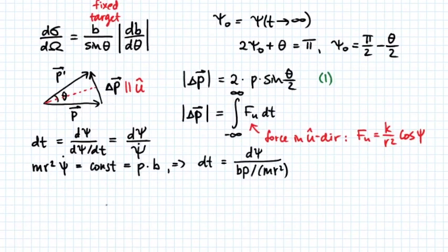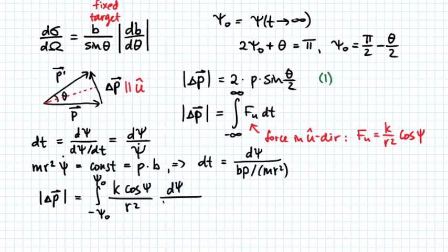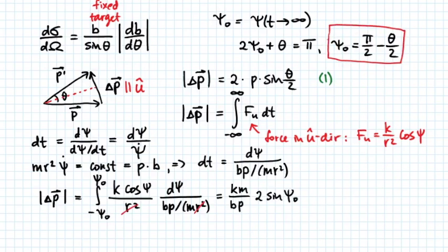Therefore, we can rewrite the integral from minus psi naught to psi naught of k cosine psi divided by r² times d psi over bp divided by mr². Note that we have some fortuitous cancellations here: r² cancels, and then we can write this integral as km divided by bp times 2 sine of the angle psi naught. Since angle psi naught can be written in terms of angle theta, we use it to get the following expression for Δp: km divided by bp times 2 cosine of θ/2.